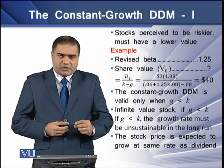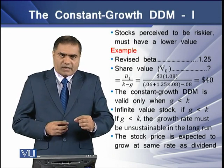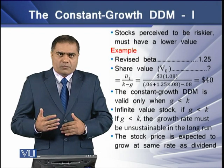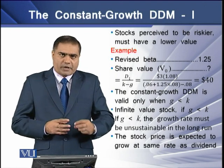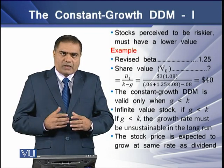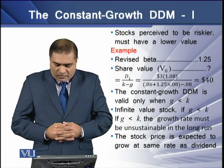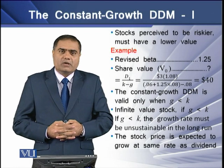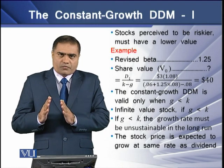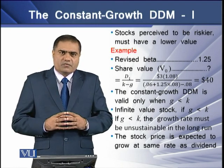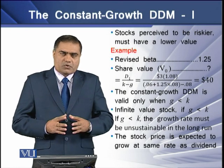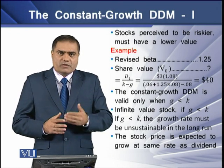The one change is with reference to K, which is the change of beta increasing from 1 to 1.25 — an increase of 0.25 — so the riskiness of the firm has increased. The answer from this model is $40. When the beta was 1, V0 was $54; with beta increased to 1.25, the value has decreased from $54 to $40 — a decline of $14 in the value of this particular stock.